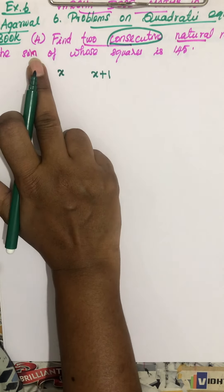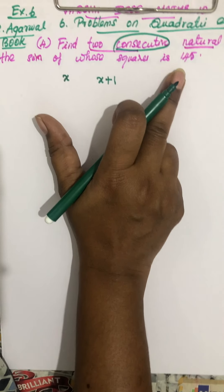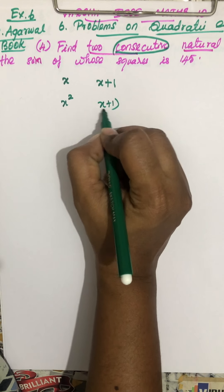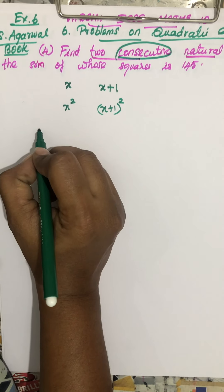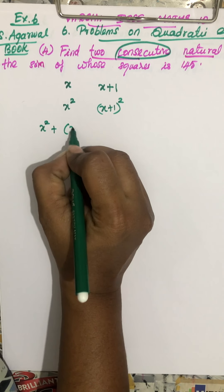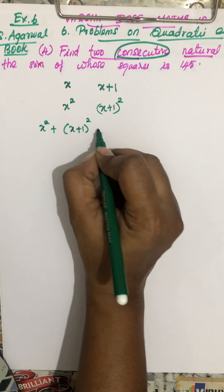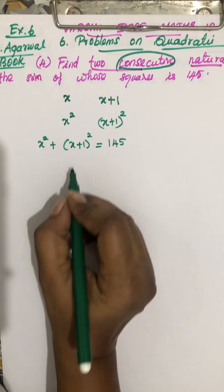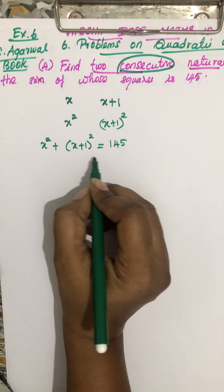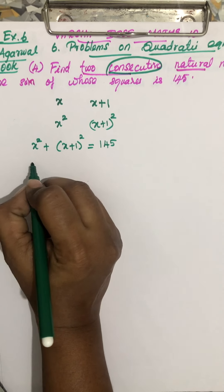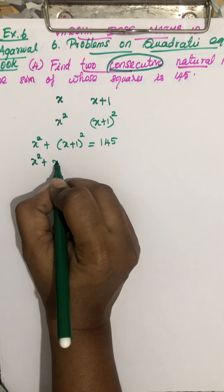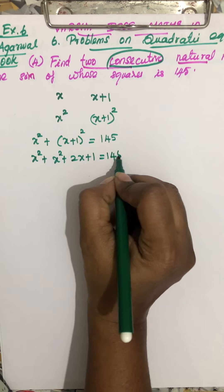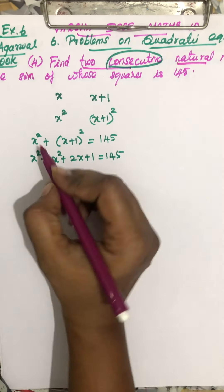The sum of whose squares is 145, meaning x squared plus (x plus one) whole squared equals 145. So expanding using the identity (a+b)² = a² + 2ab + b², we get x squared plus x squared plus 2x plus 1 equals 145.